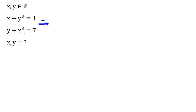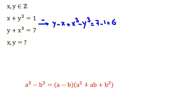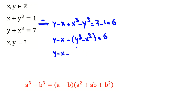If we subtract these two equations, this minus this will be y minus x plus x cubed minus y cubed equal to 7 minus 1, which equals 6. Now we apply the difference of cubes identity: y minus x minus (y cubed minus x cubed) equals 6, so y minus x minus (y minus x)(y squared plus xy plus x squared) equals 6.